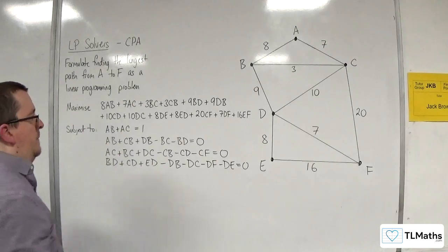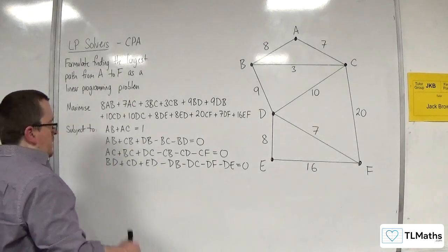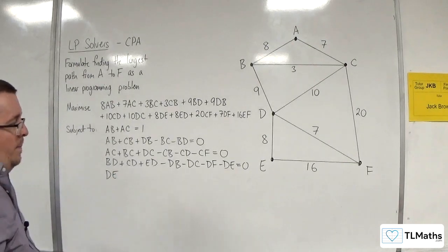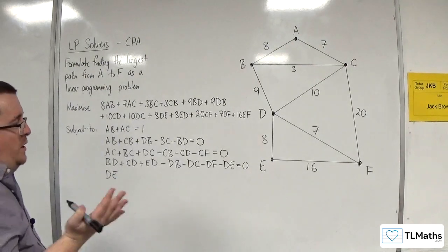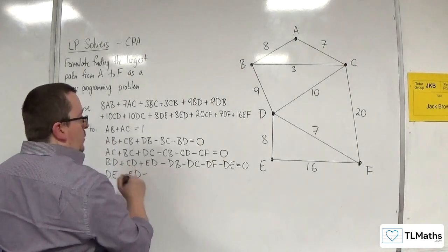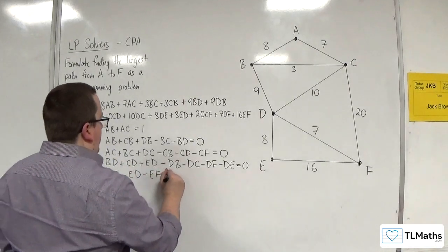Then we've got vertex E, so all the routes going in are going to be DE, and that's it. I can't have FE. Then going out, ED or EF, and that's going to be equal to 0.